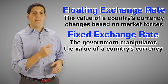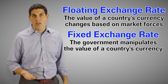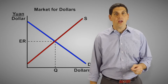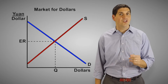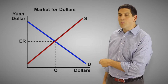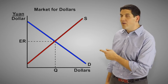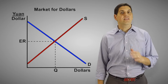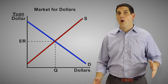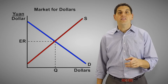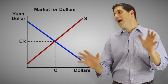So how might a country set or peg its exchange rate to another currency? To learn this, let's go to the graph and look at the supply and demand for dollars relative to Chinese Yuan. You've got the downward sloping demand curve and an upward sloping supply curve and together they've set the exchange rate.